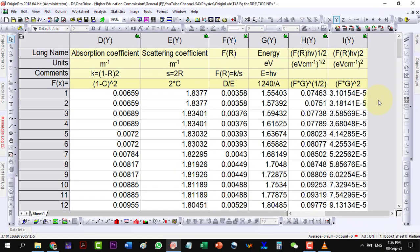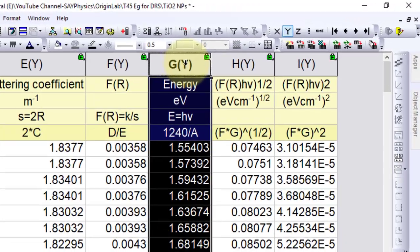Now, in order to plot hν versus F(R)hν for gamma, where gamma is one-half and two, we change column G to X axis.